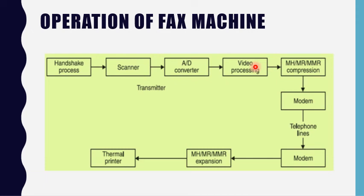The conversion of the scanner output from grey level to black and white must be performed. It may include a dithering method of generating pseudo-grey scales. Other video processing techniques include automatic background correction, automatic contrast control, edge enhancement, and modulation transfer function (MTF) processing, which can be performed in one or two dimensions. The image may also be reduced or enlarged.